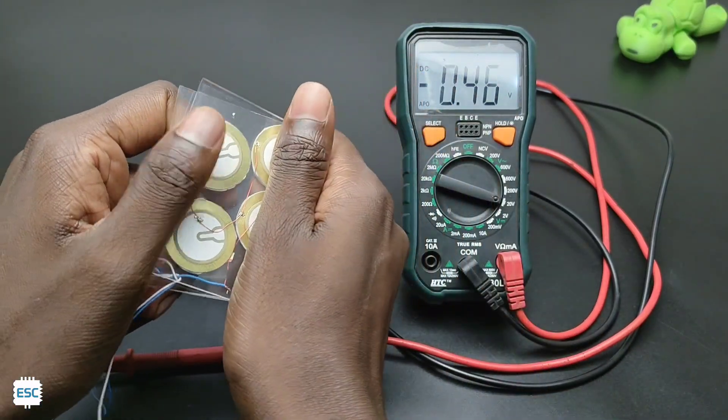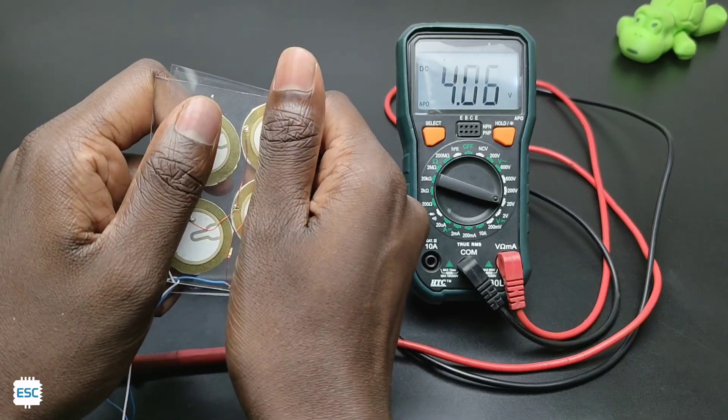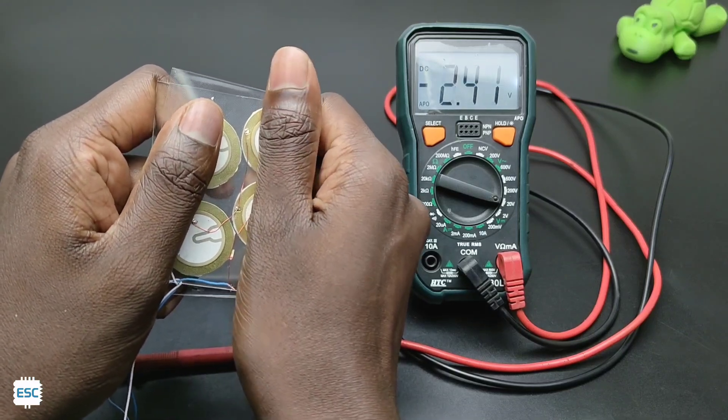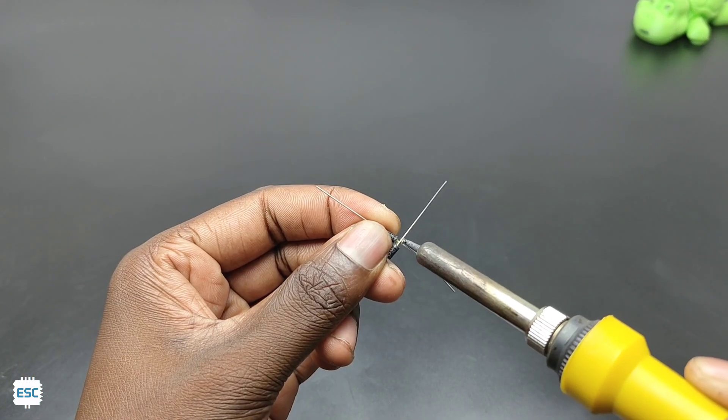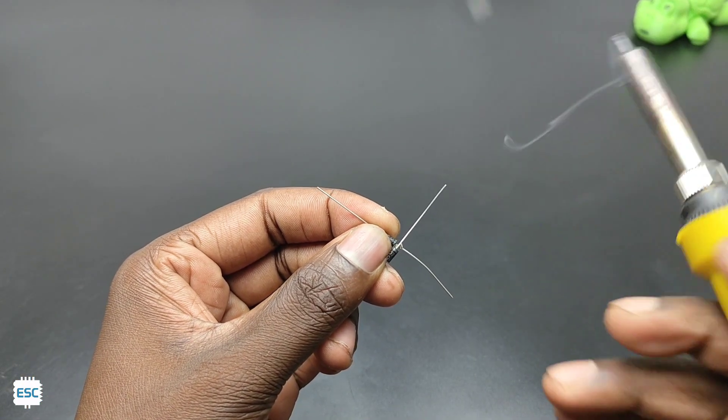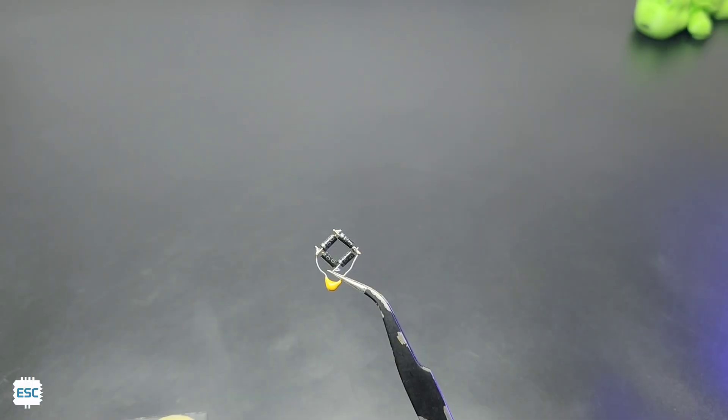Now let's measure again and I found some slight increase in the voltage output. In the next step, I made a bridge rectifier using four diodes to convert the AC to DC. Also I added a capacitor to filter the output.